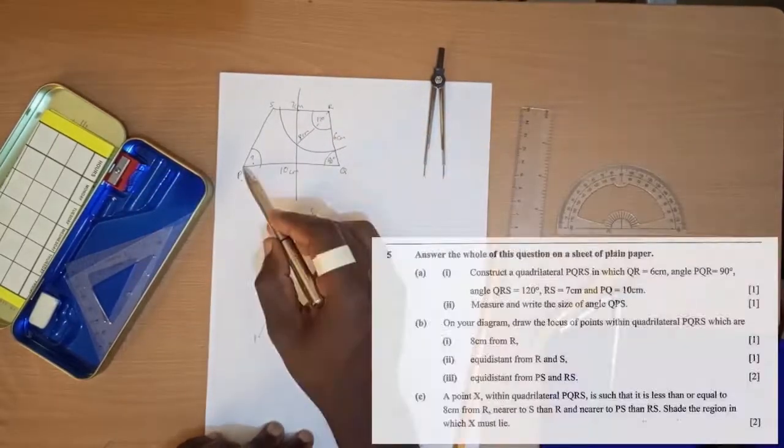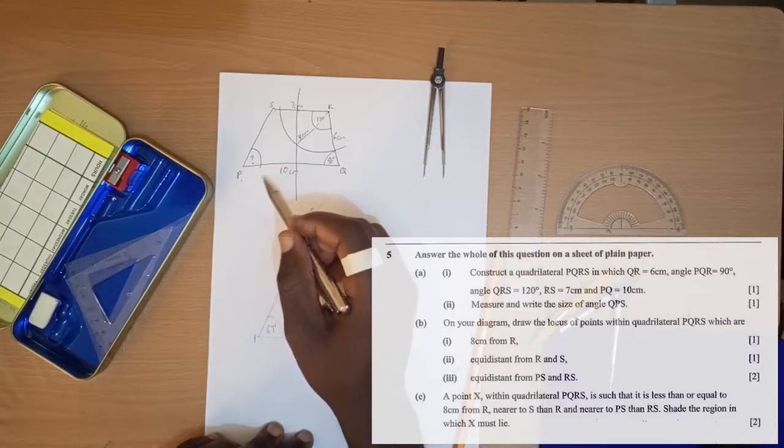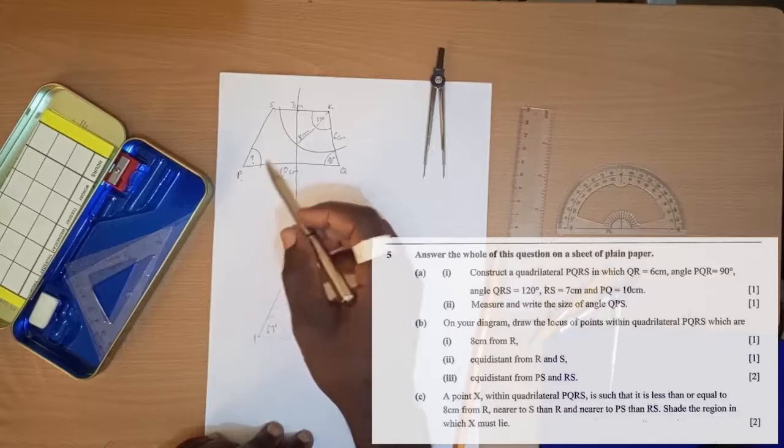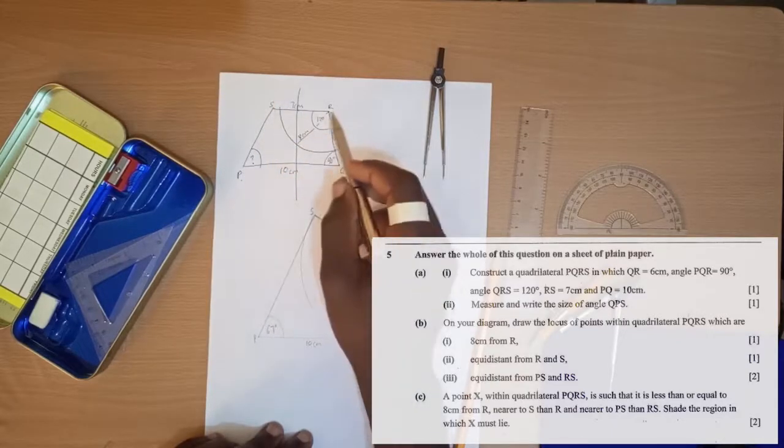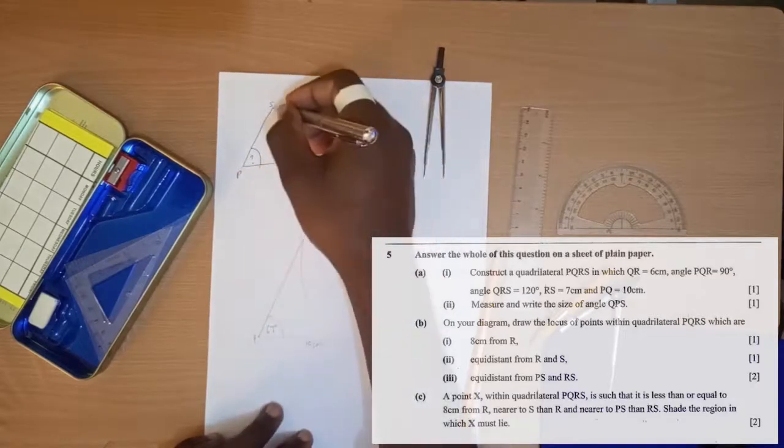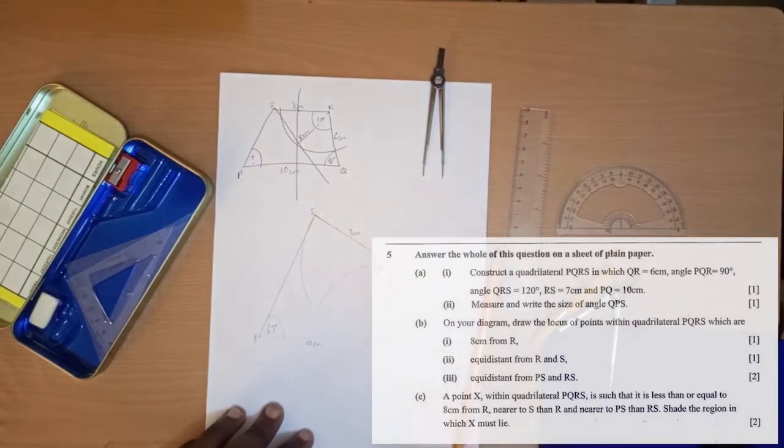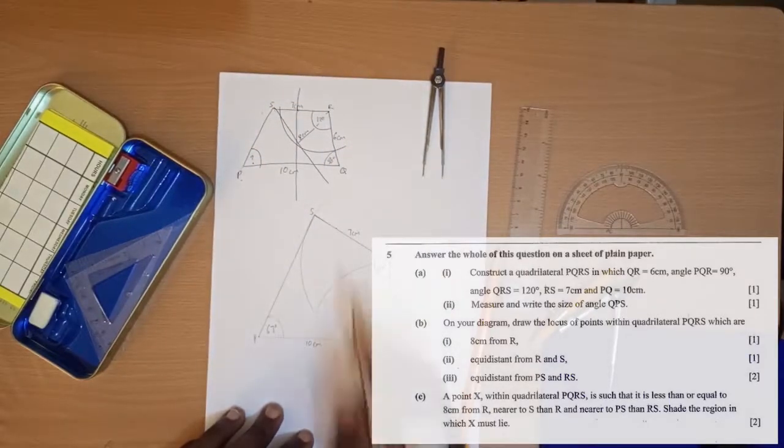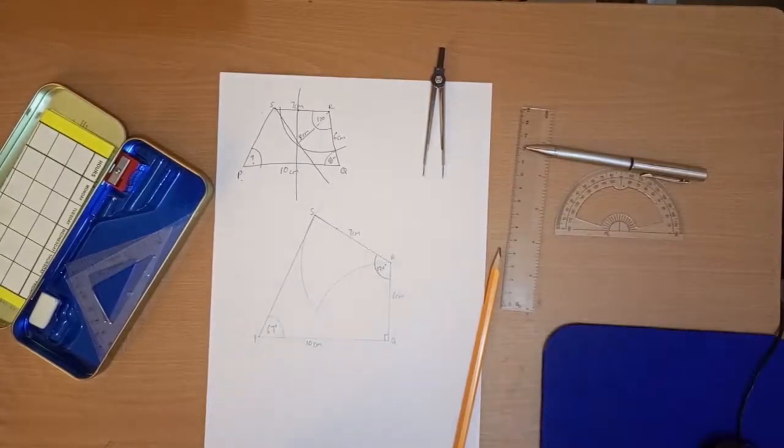Number 3 is to construct the locus of points equidistant from PS and RS. PS and RS. So it's going to come - S is common - so it's going to be something like that, cutting across like that. So let's carefully construct that and see what we get.